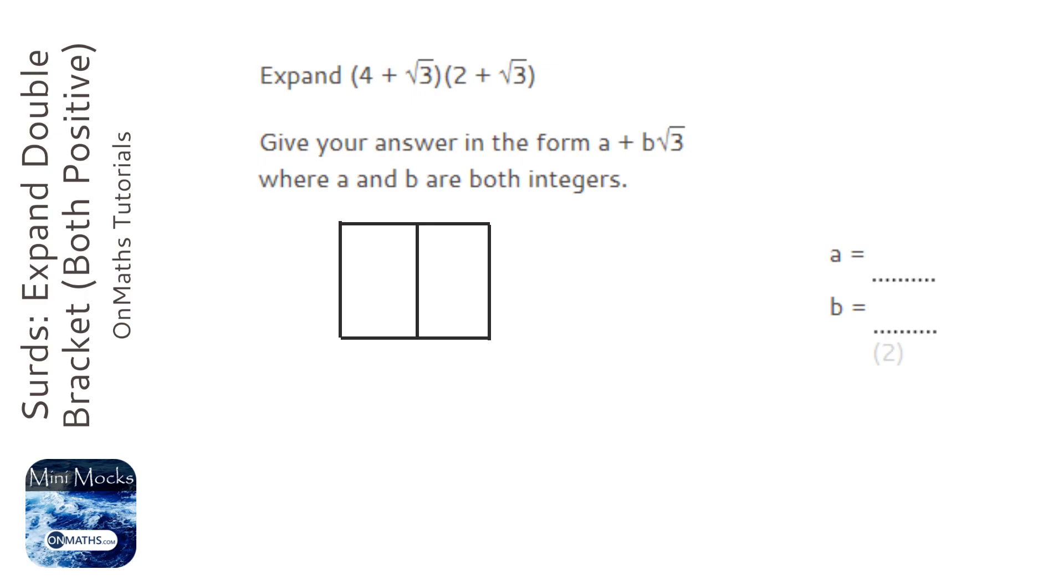But use whatever method you find useful. So we've got 4 plus root 3 times 2 plus root 3, and we'll times them out. So 2 times 4 is 8, 2 times root 3 is 2 root 3, 4 times root 3 is 4 root 3.